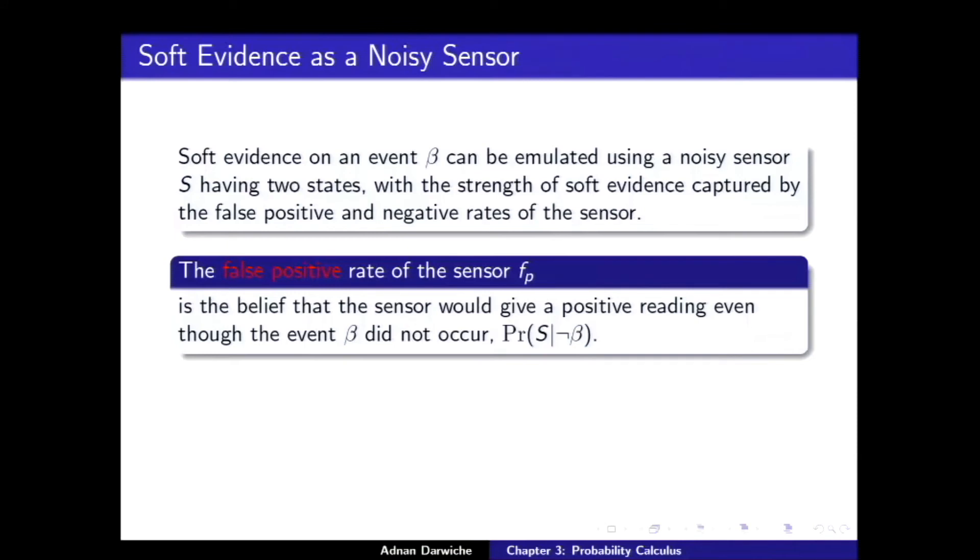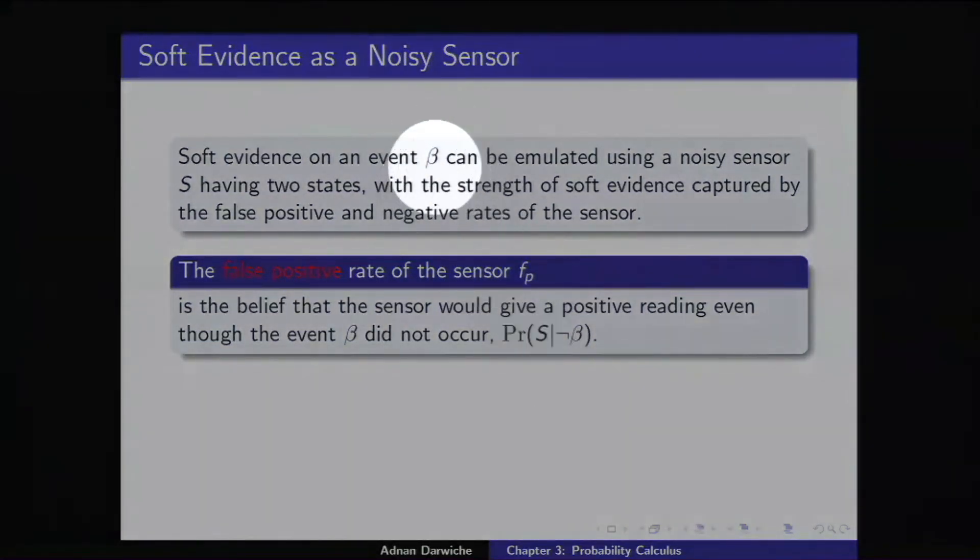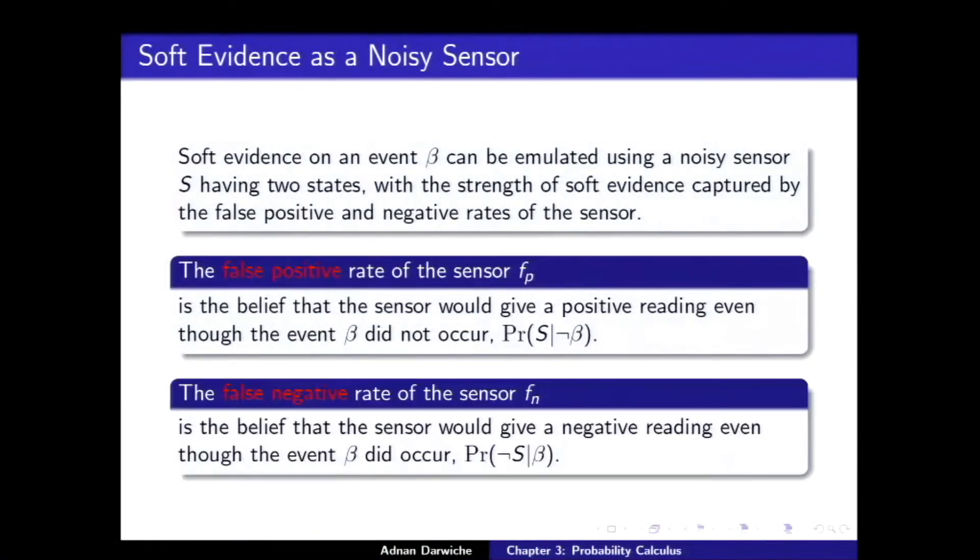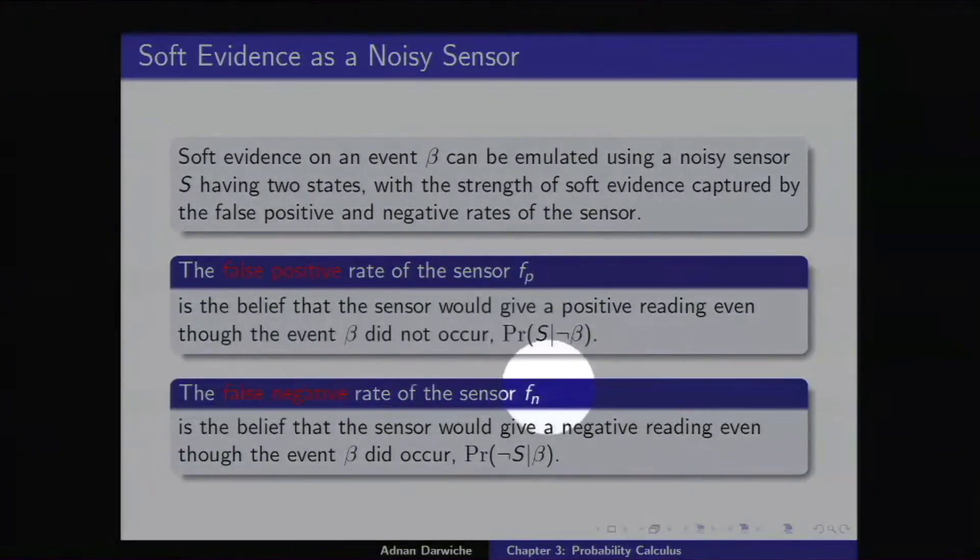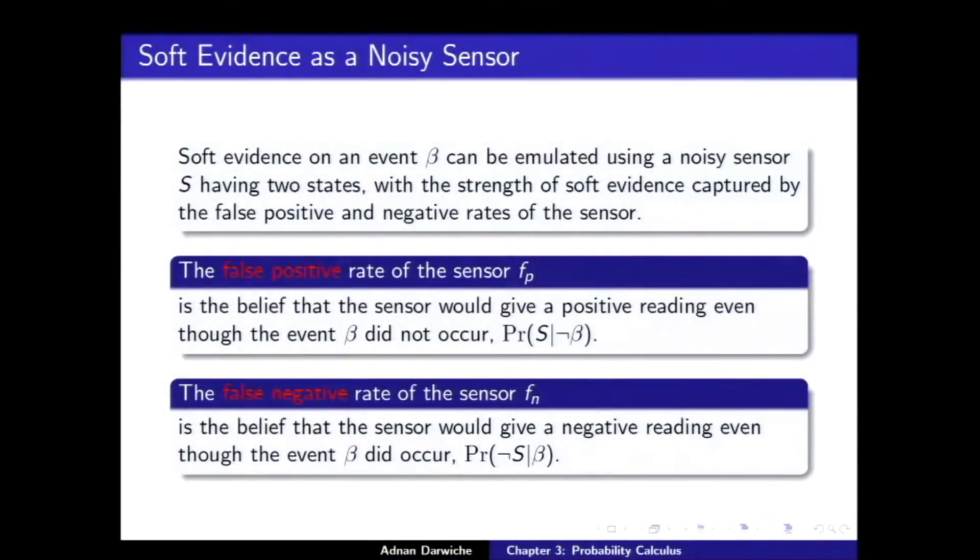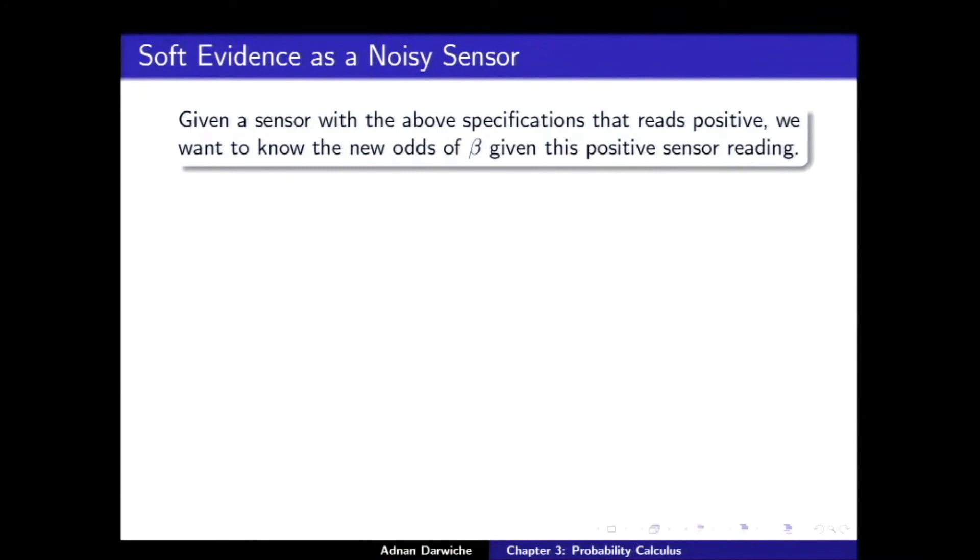We know that we're getting the soft evidence on beta, just as before. And, we're going to use a sensor S. So, the false positive rate of the sensor, let's call it FP false positive, is the belief that the sensor would give a positive reading even though the event did not occur. The probability that the sensor triggered given the event. That's false positive. And, similarly, false negative FN is this guy. False negative FN is this guy. Given a sensor with the above specification that reads positive, we want to know the new odds of beta given this positive sensor reading.